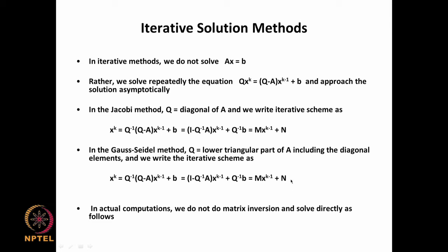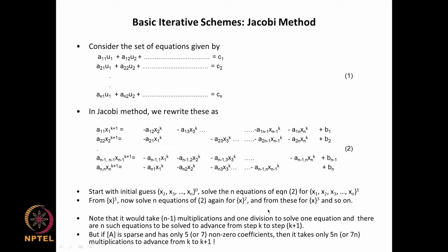Once you have this formulation, we solve with an initial guess, which can be arbitrary in the case of convergent schemes. We start with any initial guess, then get x^1, x^2, and so on, and keep iterating until the solution converges. In actual computation using Jacobi or Gauss-Seidel, we rewrite the equations to sequentially get estimated values x_1^(k+1), x_2^(k+1), all the way to x_n^(k+1), using all previous iteration values of other variables.